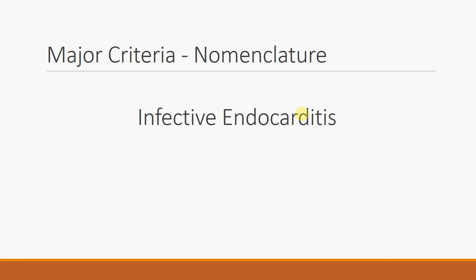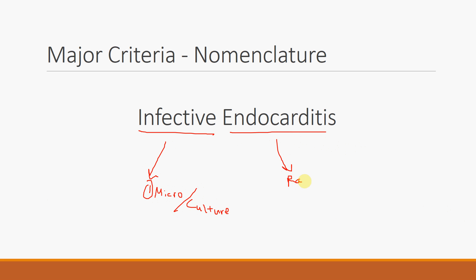The major criteria is the most important because this is what we see clinically. The pathologic criteria is based on histology and microbiology of valve leaflets and vegetations, but it's not entirely relevant since the patient has usually expired by then. The way to remember the major criteria is through the nomenclature of 'infective endocarditis': 'infective' reminds us we're looking at the microbiology — cultures — and 'endocarditis' reminds us this is a disease of the heart, so we're looking at radiographical evidence.